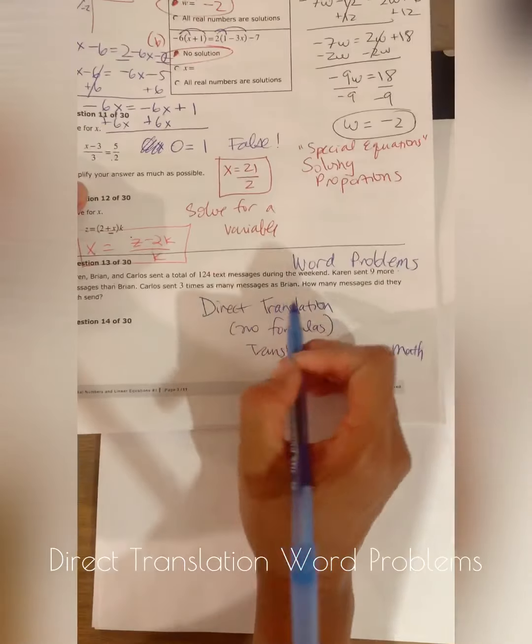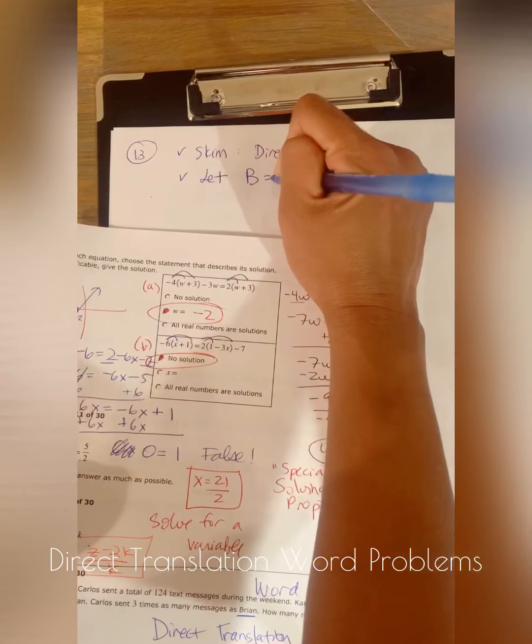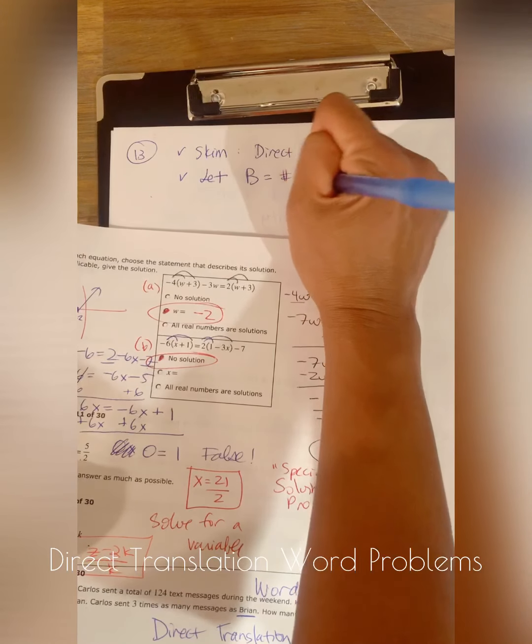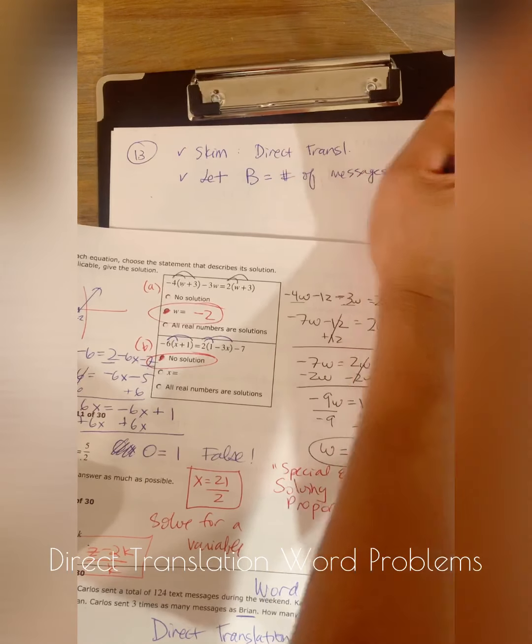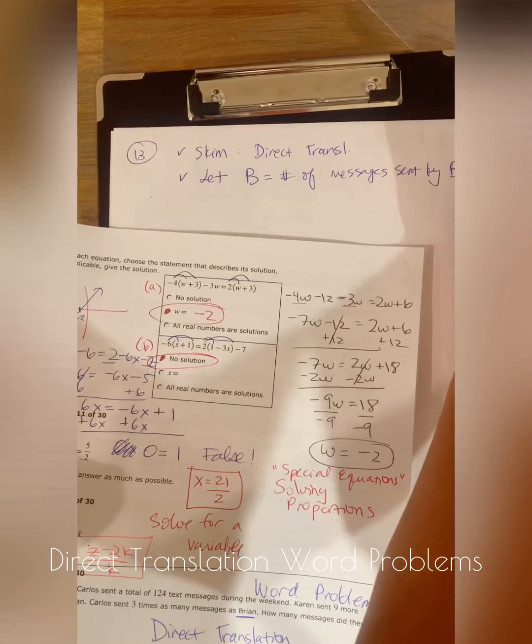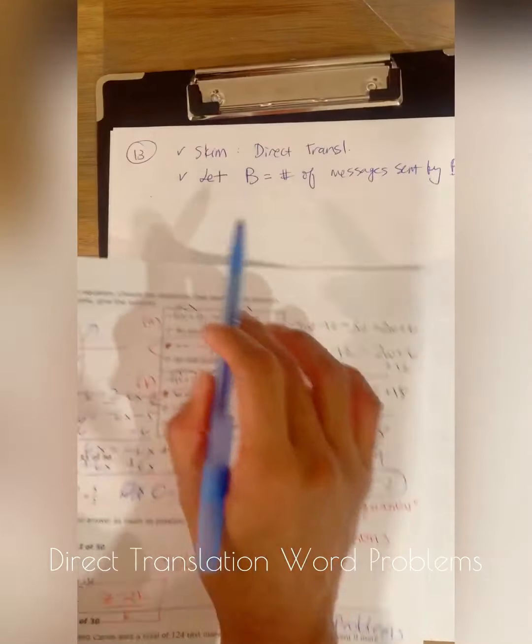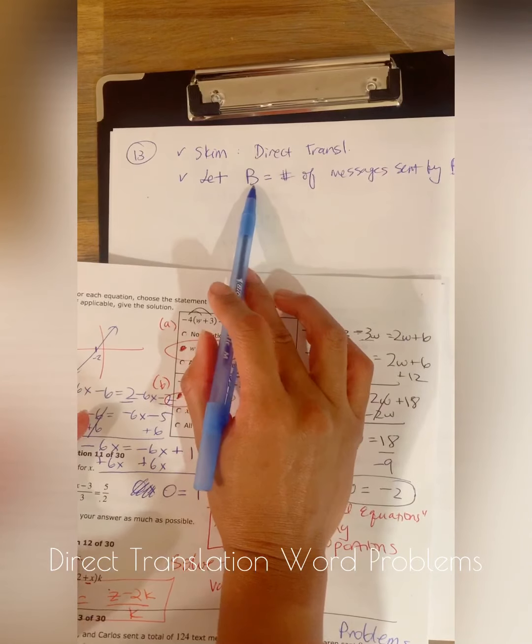So the thing is, I want to find what Brian's is. I'm going to let B equal to the number of messages sent by Brian. So once I know what Brian's is, I can easily find what Carlos and Karen's is. So B is the thing that I need to find.